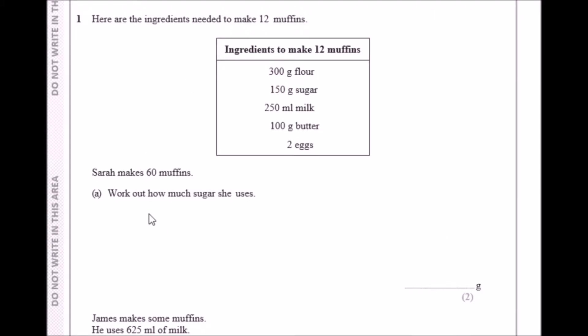The smartest thing to do is consider this as a ratio. We want to see how many times 60 goes into 12. This will tell you how many times she needs for each of these ingredients. Doing this in the calculator, 60 by 12 will give you 5.